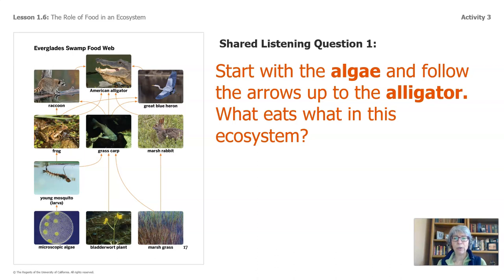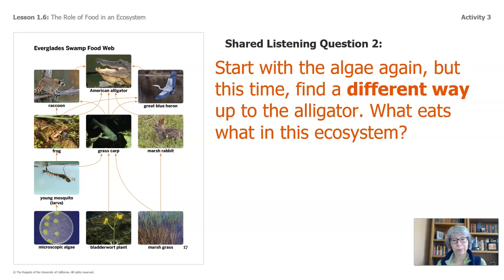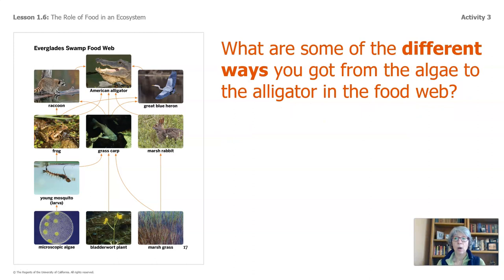Start with algae and follow the arrows up to the alligator — this is shared listening question number one. What eats what in this ecosystem? There's space on your packet to write down your response, or just share it with your family member. Shared question number two: start with the algae again, but this time find a different way up to the alligator. What eats what in this ecosystem? This is the Everglades swamp ecosystem. What are some of the different ways you got from the algae to the alligator in this food web?